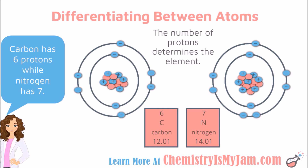The atomic number, which is the number of protons, determines which element you are dealing with. In this example, I have carbon and nitrogen. If you count the blue positive particles at the center — those are the protons — you can see that there are six protons here and seven protons here. That is the difference between carbon and nitrogen. The number of neutrons does not matter. The number of electrons does not matter. It is the number of protons that tells me this is carbon, this is nitrogen.